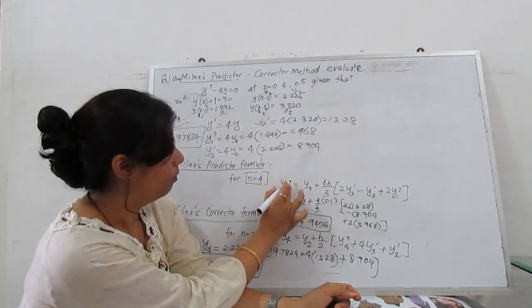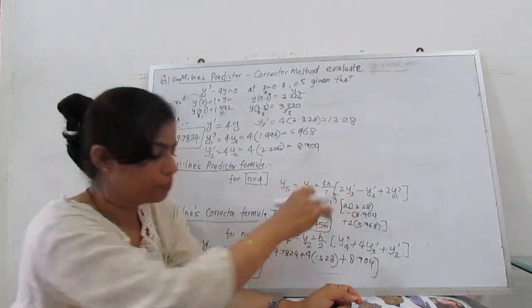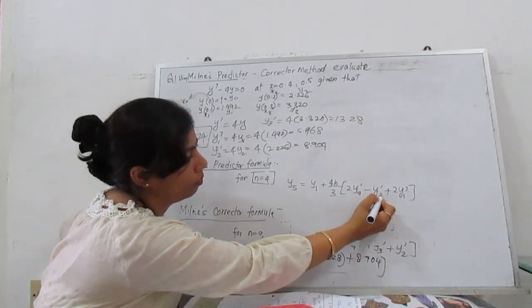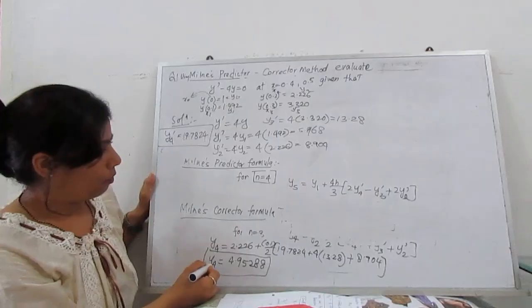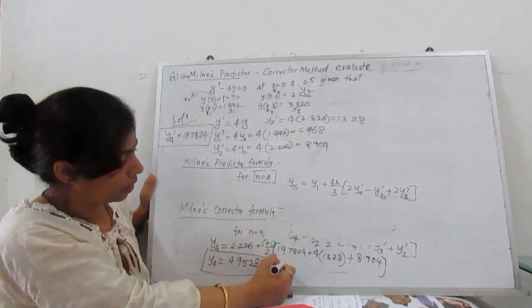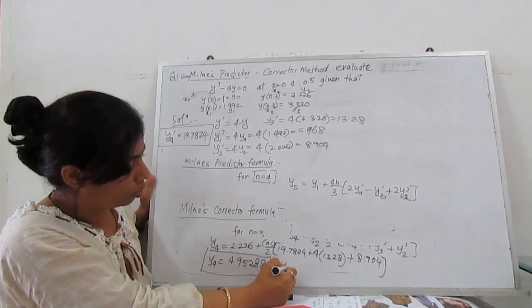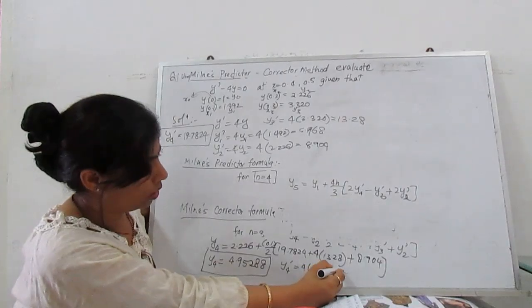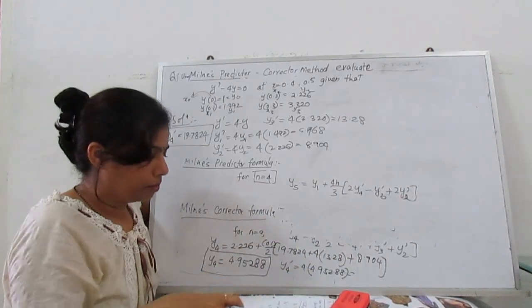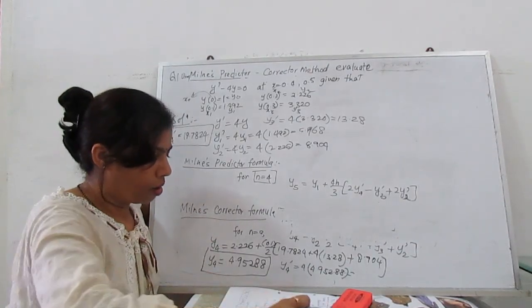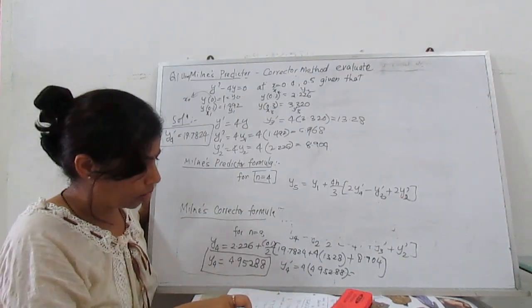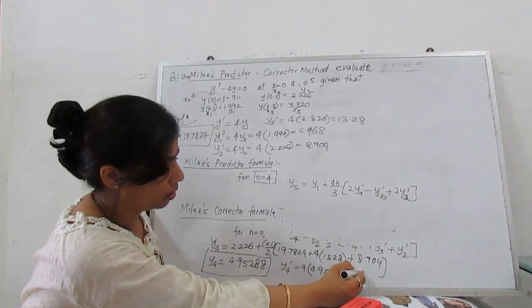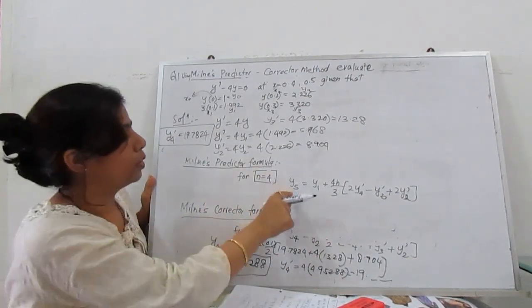When n = 4, you have to substitute in the generalized formula. Your formula becomes y₅ = y₁ + (4h/3)[2y'₄ - y'₃ + 2y'₂]. Now we have y₄ from which we find y'₄. y'₄ is 4 times y₄, 4 times 4.95288, which gives 19.8115.